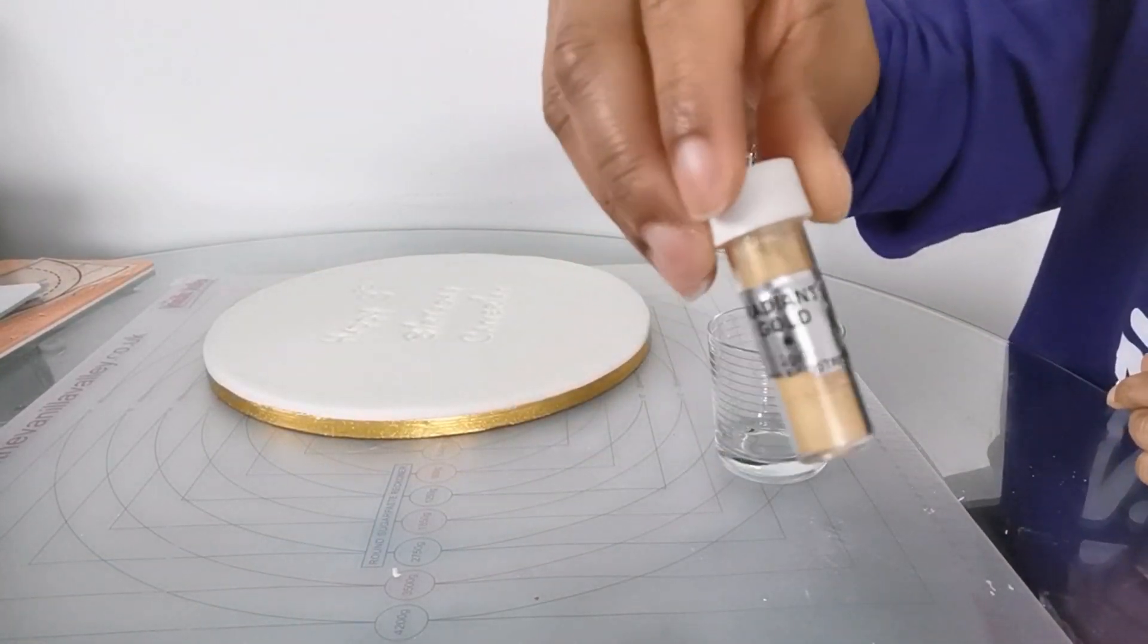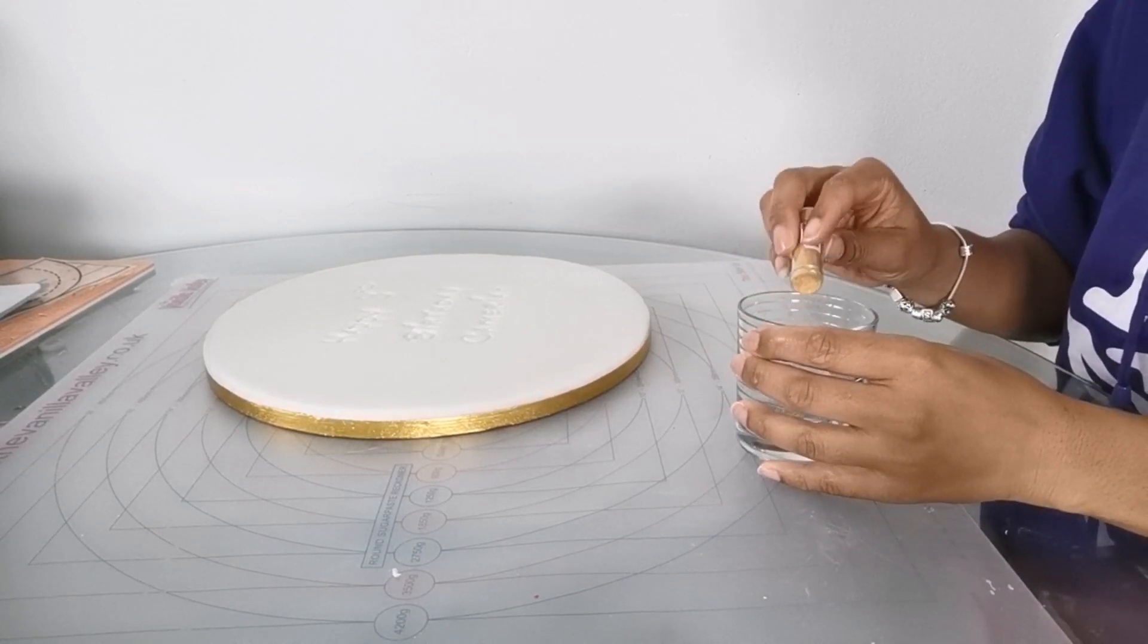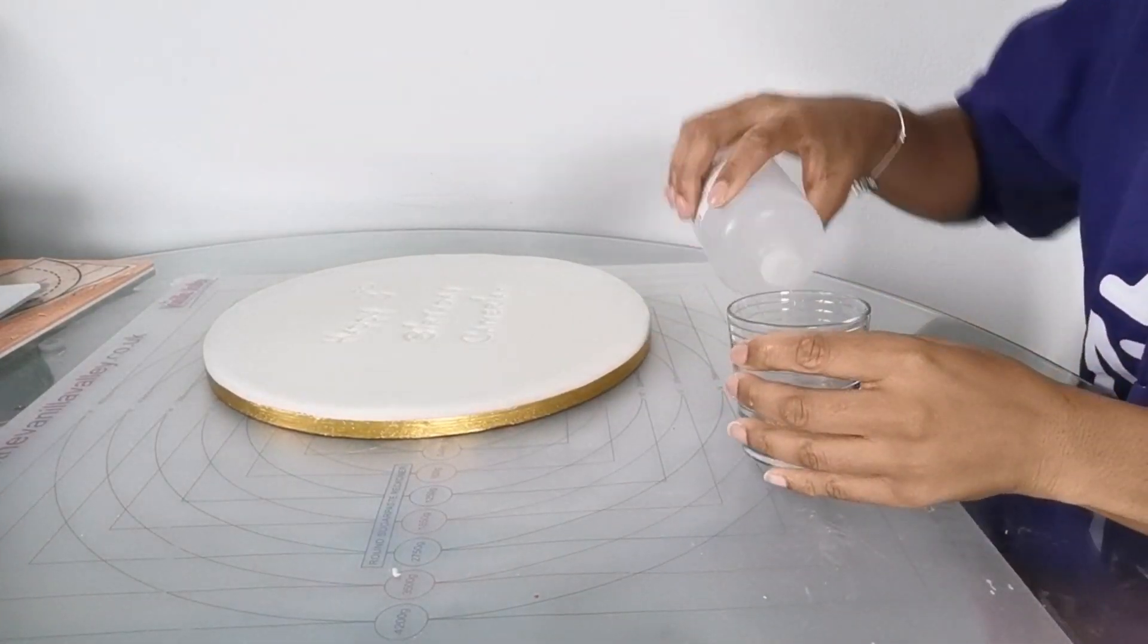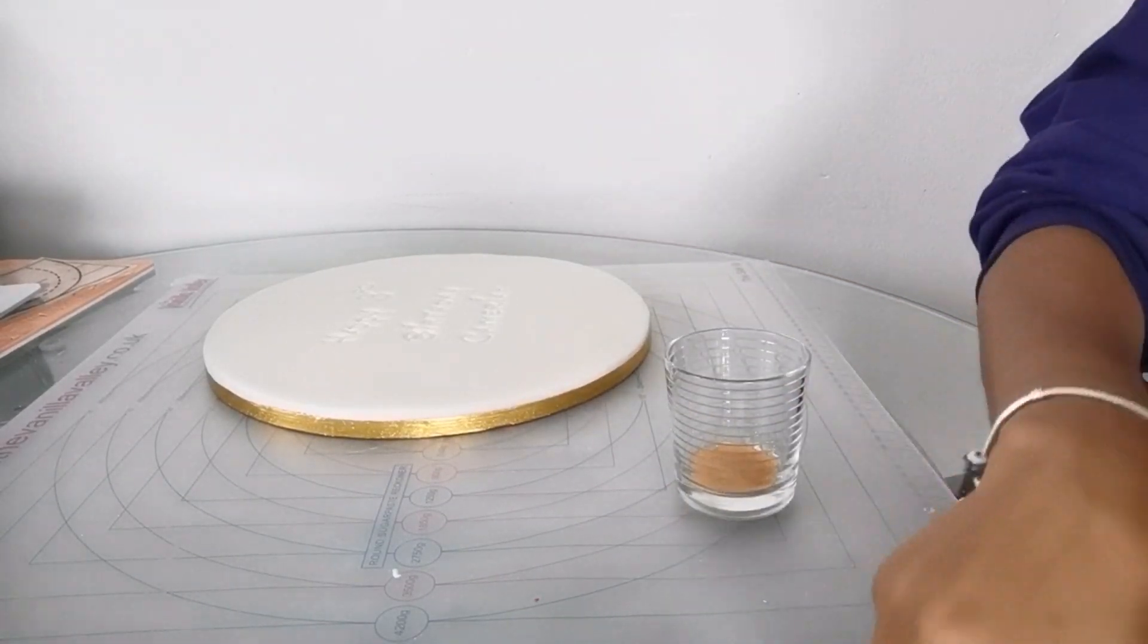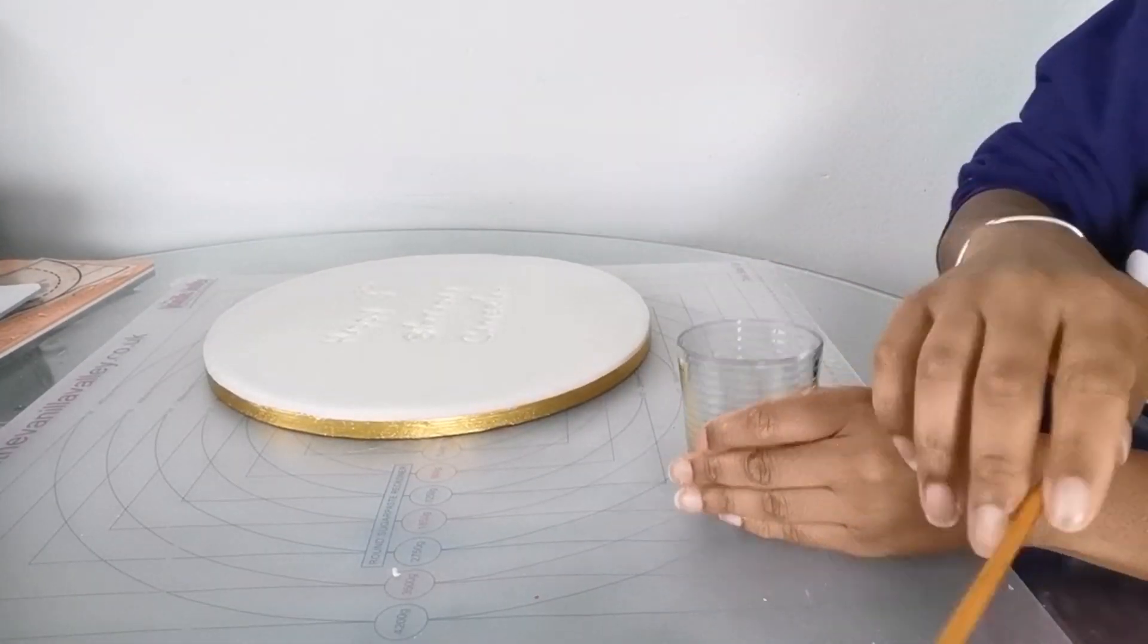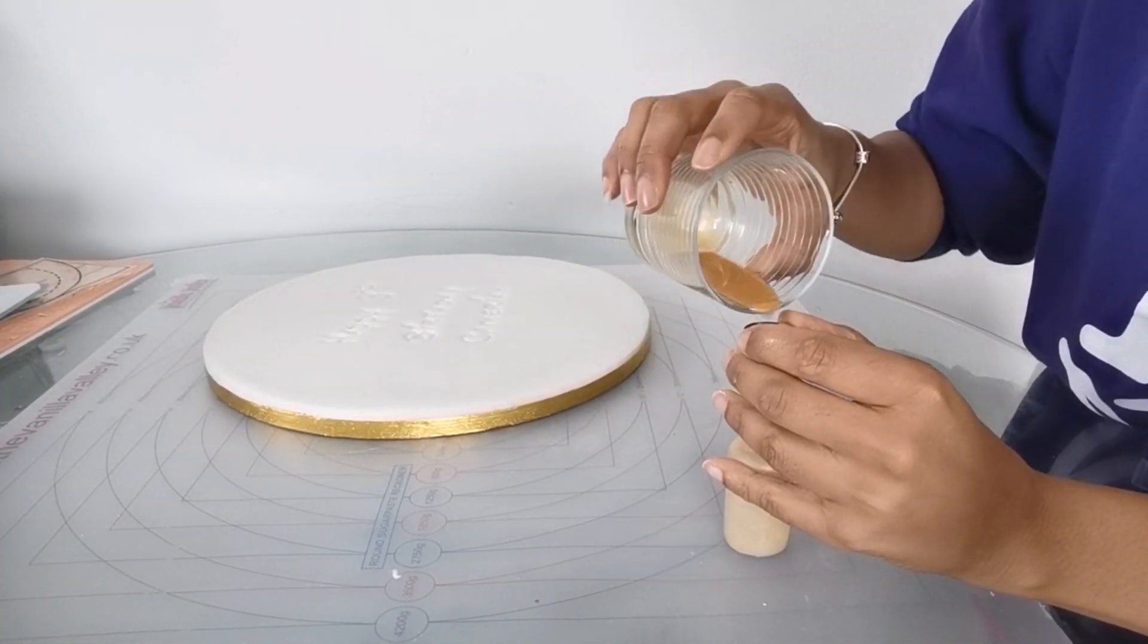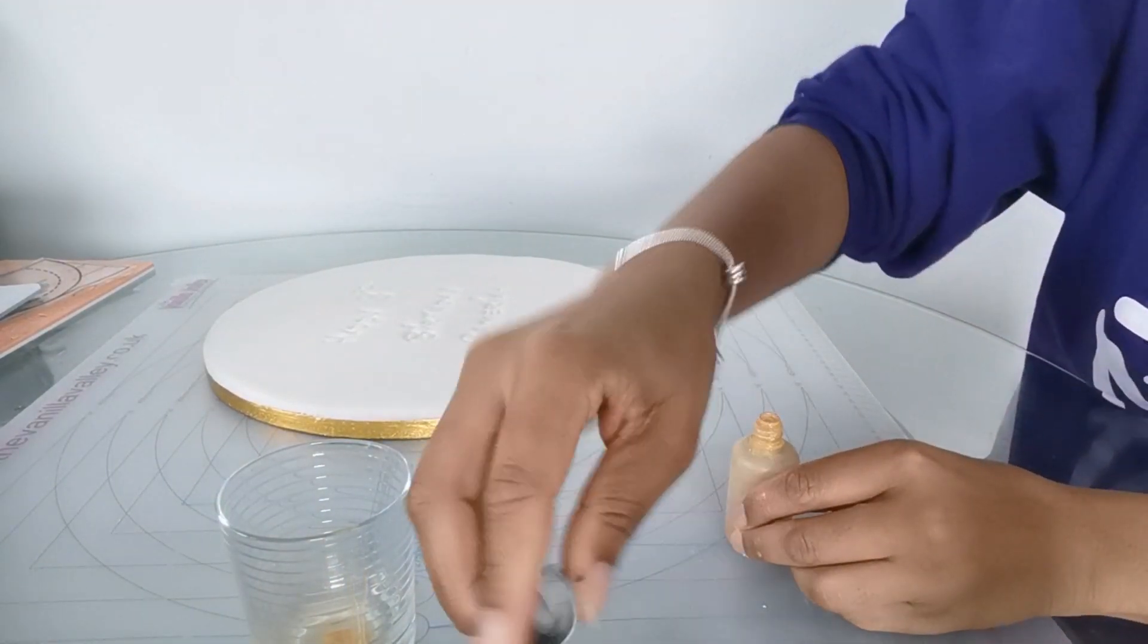Now we're going to make the luster dust paint. I'm using Radiant Gold by Sugarflare and I pour a little bit of it in a glass. Then I use some dipping solution which has a high percentage of alcohol, and this means that the paint will dry quicker than if you use vodka or lemon extract. I mix it up together. Then I will use a piping nozzle, a round one, and use it as a funnel. I have my perfect pour bottle which I also got from Sweet Stamp. I pour it over the top of the bottle and pour the liquid in, put the lid on top, and give it a good shake.